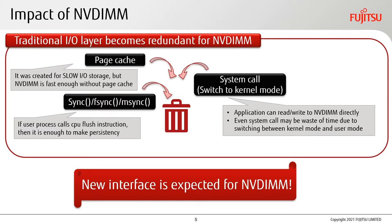The impact of NVDIMM is very significant. The traditional IO layer becomes redundant for NVDIMM. For example, PageCache is redundant — it was created for slow IO storage, but NVDIMM is fast enough without it. The sync system call is also redundant; if a user process calls a CPU cache flush instruction, that's enough to ensure persistency. Even system calls themselves may be redundant, as applications can read or write to NVDIMM directly — system calls may be a waste of time due to switching between kernel mode and user mode. So a new interface is expected for NVDIMM.